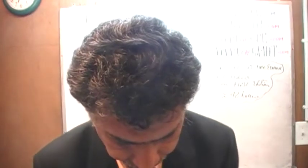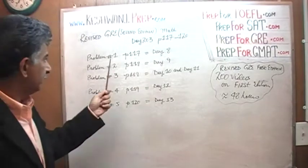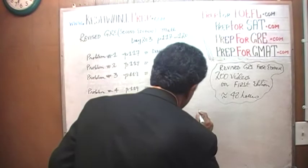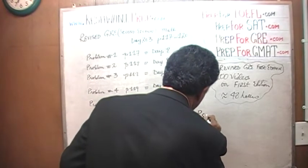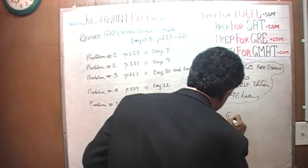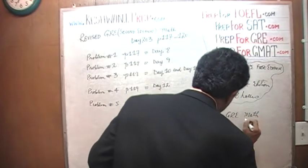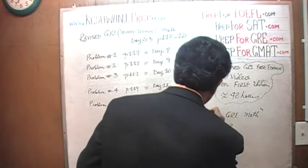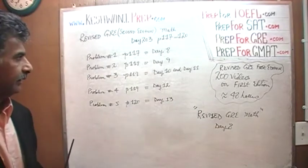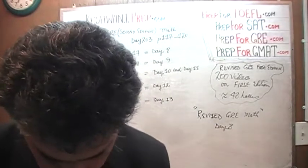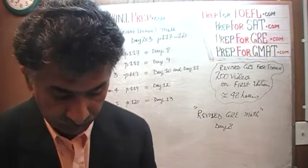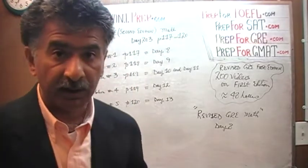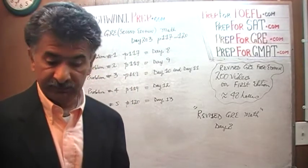So let's get going. On page 117, problem number one — you're going to watch day number eight. Just type in the tag: Revised GRE math, day eight. Just type in that tag and it will pop right up. In my hand I'll be holding the first edition book — pay no attention to which book I'm holding. It's the exact same problem, the exact same page number. They haven't changed anything at all.